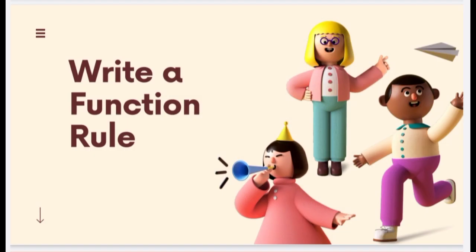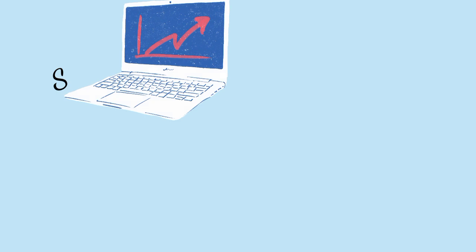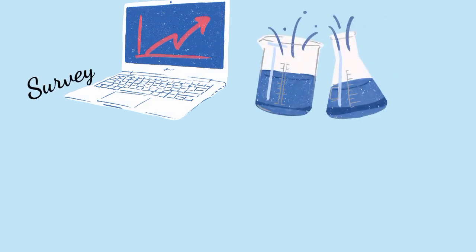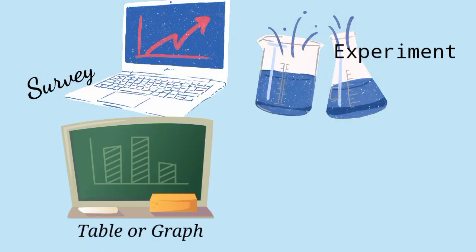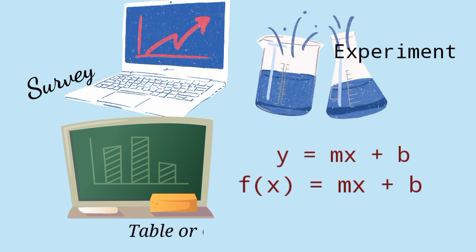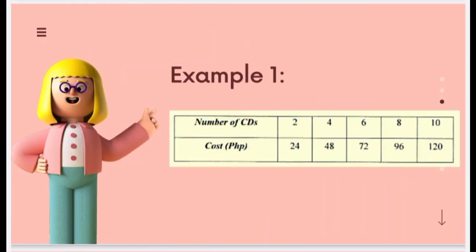In many situations, data is collected by conducting a survey or an experiment. To visualize the data, it is arranged in a table or a graph. Most often, a function rule is needed to predict additional values of the independent variable. To understand this better, let's have an example.